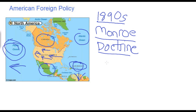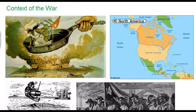It is within this broader foreign policy context that we begin to see growing conflicts between the United States and European nations at the end of the 19th century. The most violent of these foreign conflicts is the Spanish-American War.